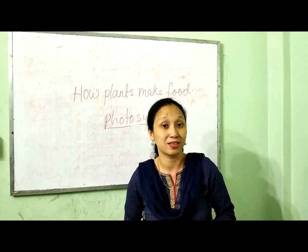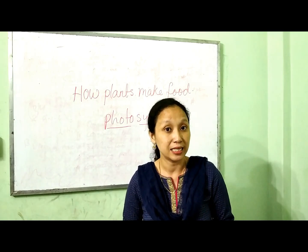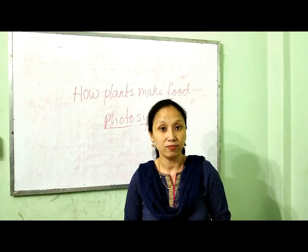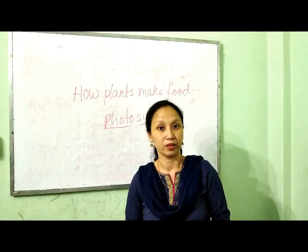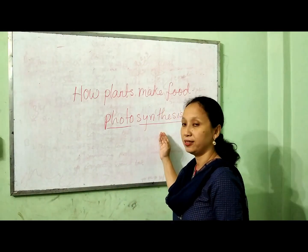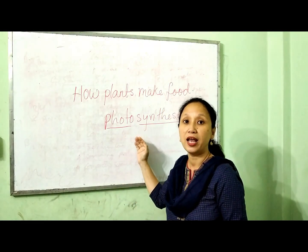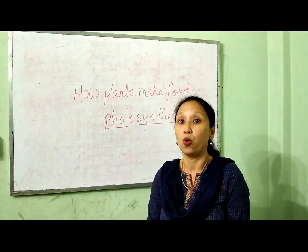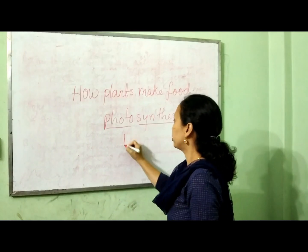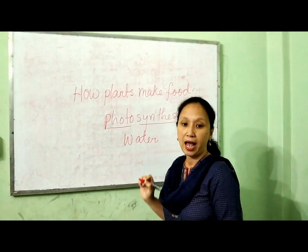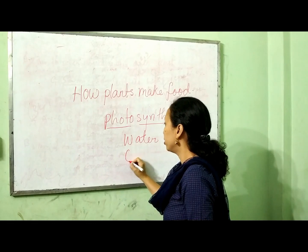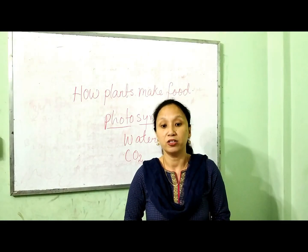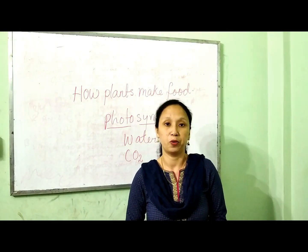If I were to ask you how would you make tea, your answer would be water, tea leaves, sugar, and milk. Now let us see what are the ingredients that plants use in photosynthesis. Plants use water which they get from the soil, carbon dioxide from the air, and they capture the energy from sunlight to prepare their food.